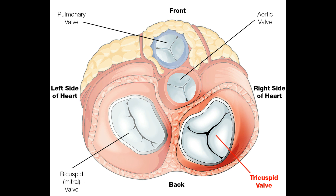The fifth one is the bicuspid wall, located between the left atrium and left ventricle. During ventricular contraction, it prevents the blood from moving from the left ventricle into the left atrium.